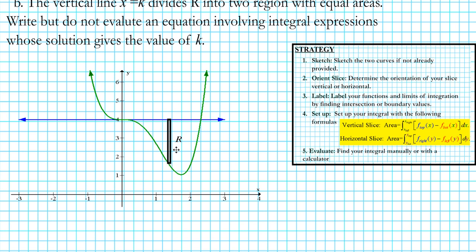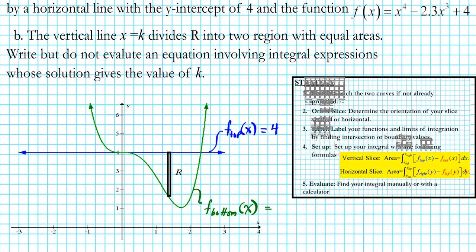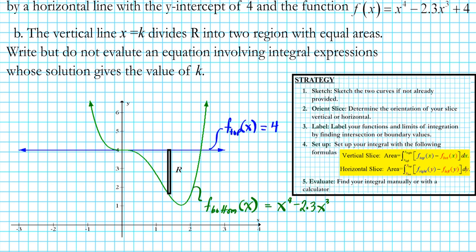Now that we have the orientation of our slice, step three is to label our functions. This horizontal line going through y = 4 is the function on the top of the region, so we call this f_top(x) = 4. The function on the bottom of the region is f_bottom(x) = x⁴ − 2.3x³ + 4. So we have the function on the top and the function on the bottom.